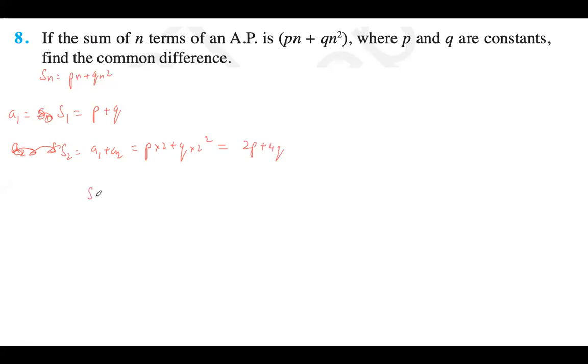Now if you do S₂ minus S₁, you'll get a₂. So this is 2P plus 4Q minus P plus Q. This is my sum of two terms. Subtract sum of one term to get the second term. 2P minus P is P, 4Q minus Q is 3Q. So P plus 3Q.